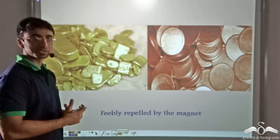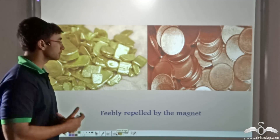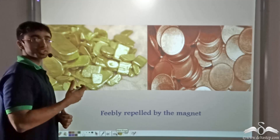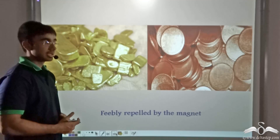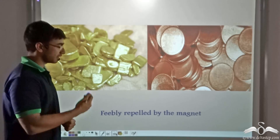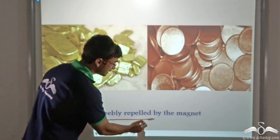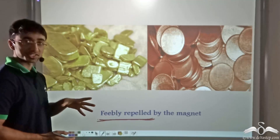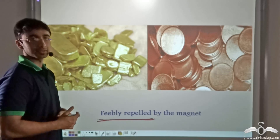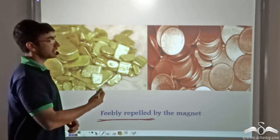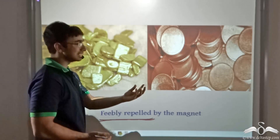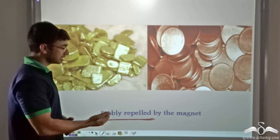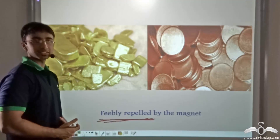Now let's say you take this magnet near some other substances — for example, your mother's jewellery. Jewellery is usually made of gold, and a bigger surprise awaits you: gold is feebly repelled by the magnet, not attracted but feebly repelled. A similar result you will find if you take this magnet near any copper item, such as copper utensils — they will also be feebly repelled by the magnet.